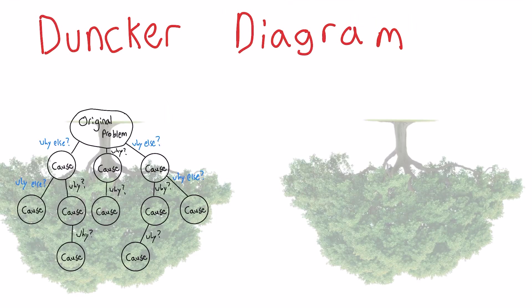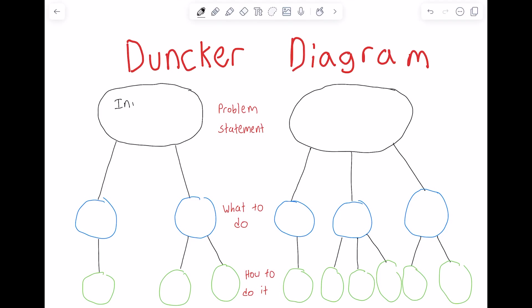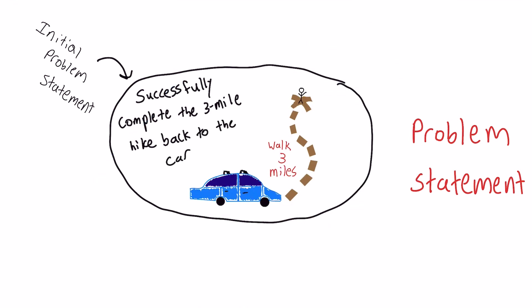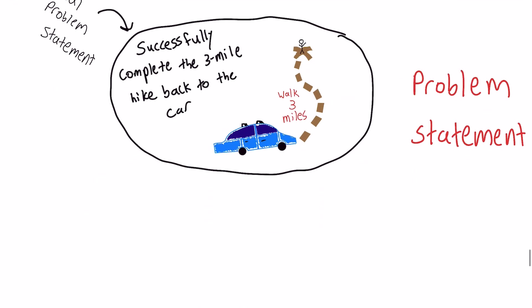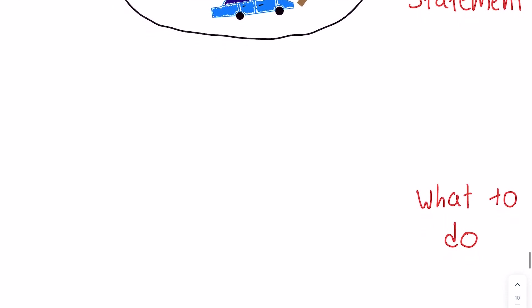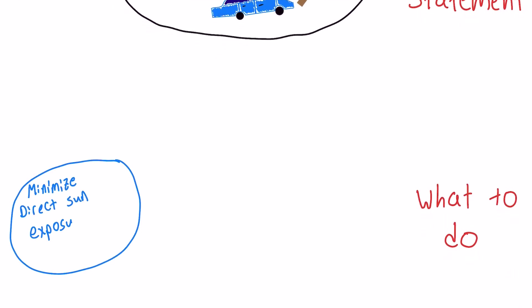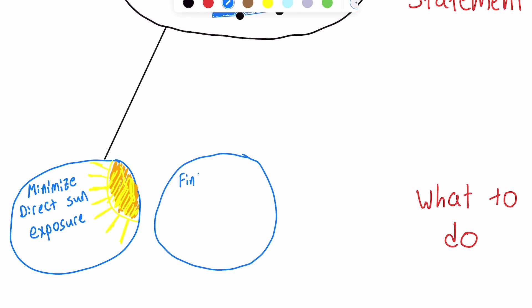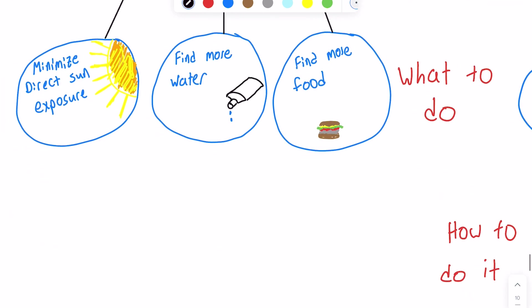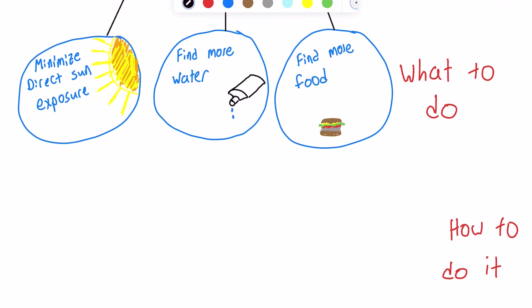At the top of the left tree, you put your initial problem statement. Imagine you're the hiker from the beginning of this video — your initial problem statement would be: successfully complete the three-mile hike back to the car. The next level of the tree is called 'what to do.' This is where you put what you need to do to solve the problem — things like minimize direct sun exposure, find more water, or find more food. The bottom level is called 'how to do it,' where you list specific things that could be done to achieve each 'what to do' option.